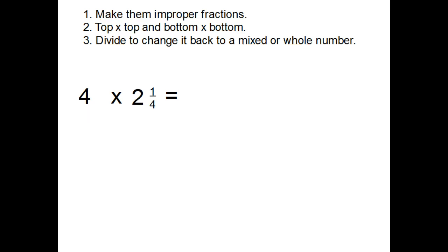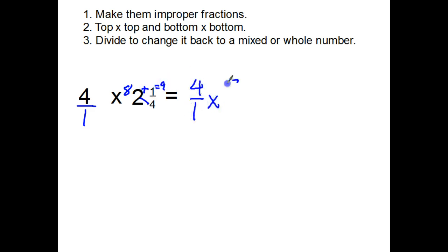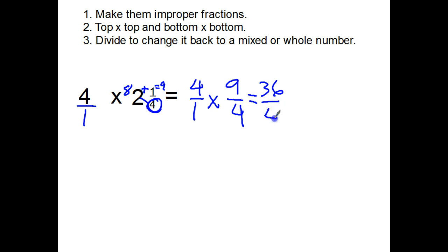Let's try another one. Step one: improper fractions. Four stays as four over one. Two times four is eight, eight plus one is nine, so two and a quarter becomes nine over four. So we've got four over one times nine over four. Top times top: thirty-six. Bottom times bottom: four.